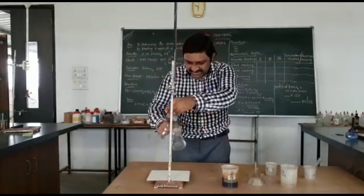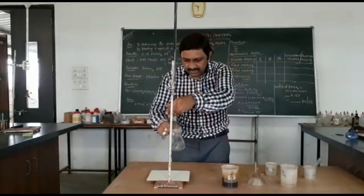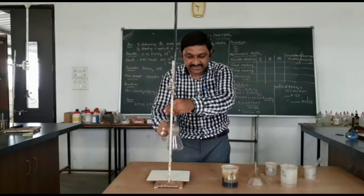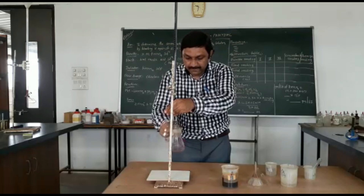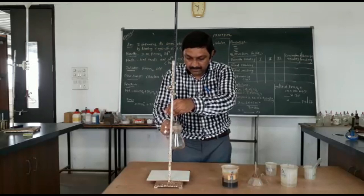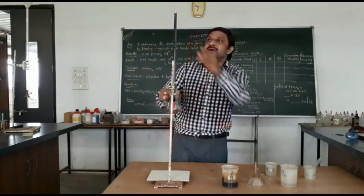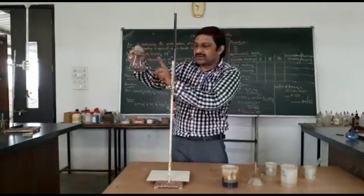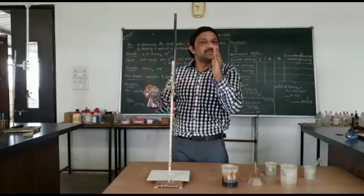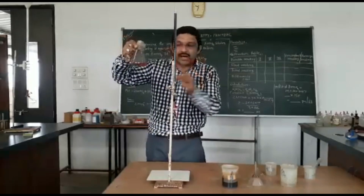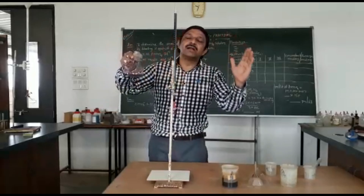Now I am doing the titration. The solution goes from colorless to light pink. Do your titration drop-wise. Here is your permanent pink color — the endpoint has been reached. My reading is 8.78, and your titration is over. Colorless to light pink is the endpoint.